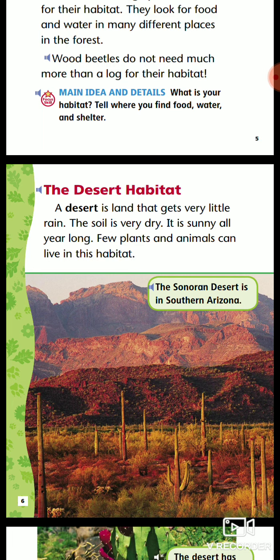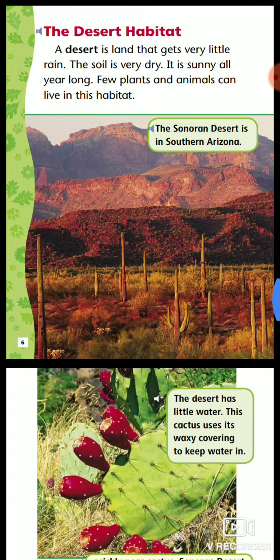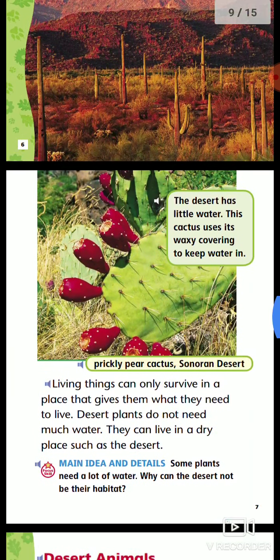The desert habitat is land that gets very little rain. The soil is very dry. It is sunny all year long. Only a few plants and animals can live in this habitat.